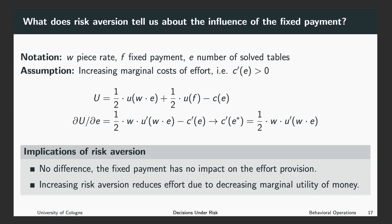Let us assume that we have increasing marginal costs of effort, which means the first derivative of C with respect to E is larger than zero. This means that solving the first table is less hurtful than solving the second table, which is less hurtful than solving the third table, and so on. One idea is that if you increase the number of tables you want to solve within 60 minutes, this increases the time pressure, which implies that solving more tables becomes more hurtful.